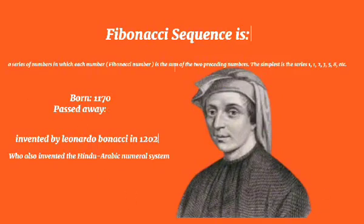Fibonacci sequence is a series of numbers in which each number is the sum of two preceding numbers. As it shows, it is invented by Leonardo Bonacci in 1202, who also invented the Hindu-Arabic numeral system.